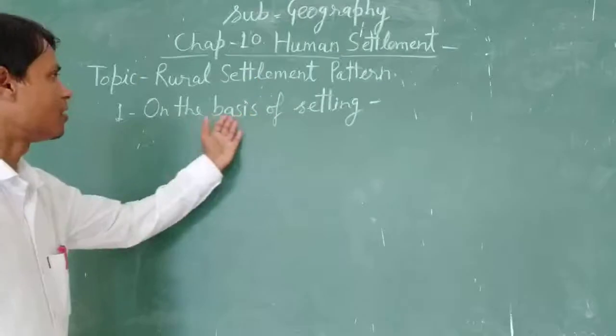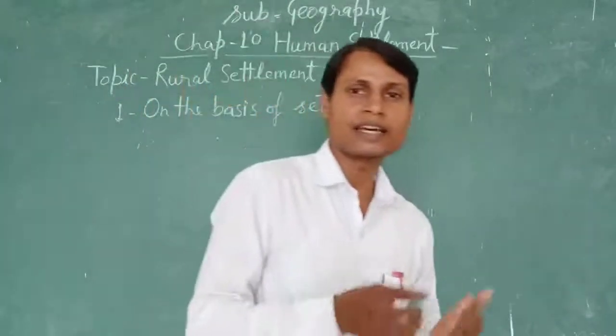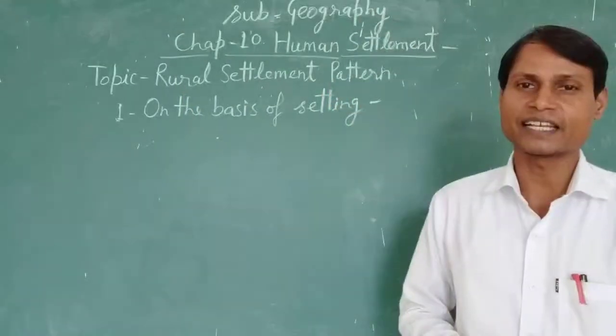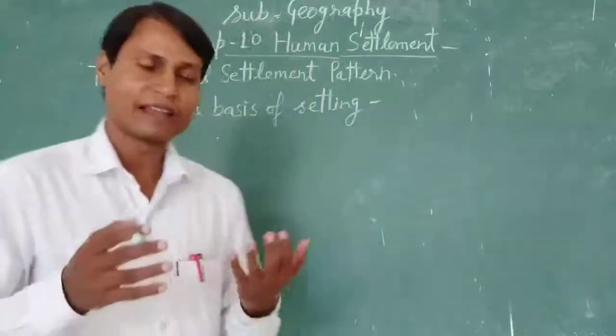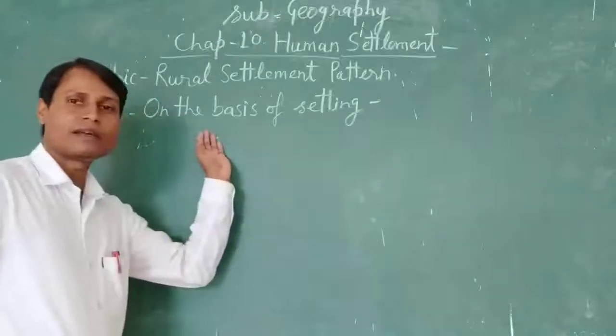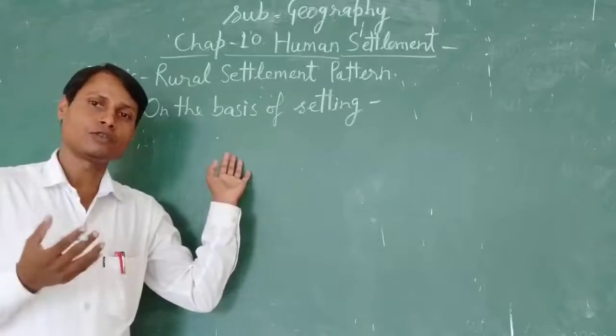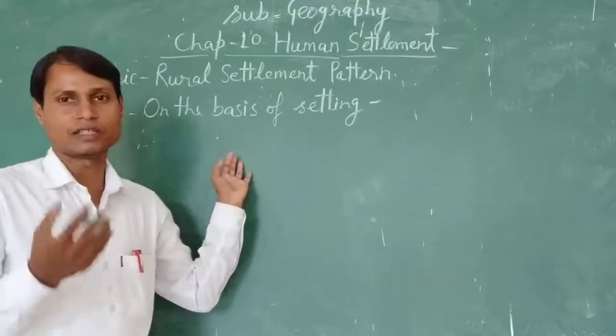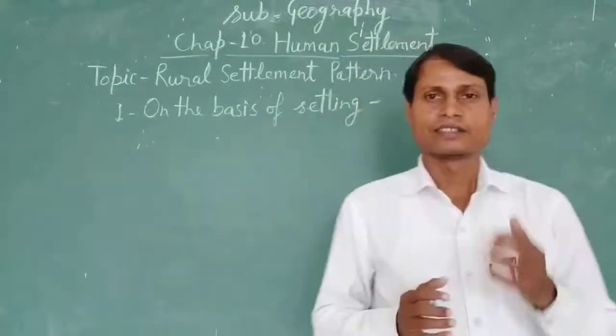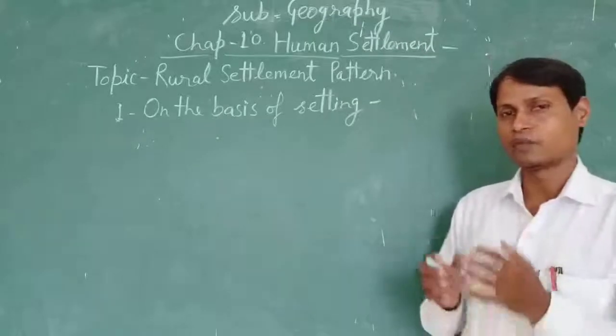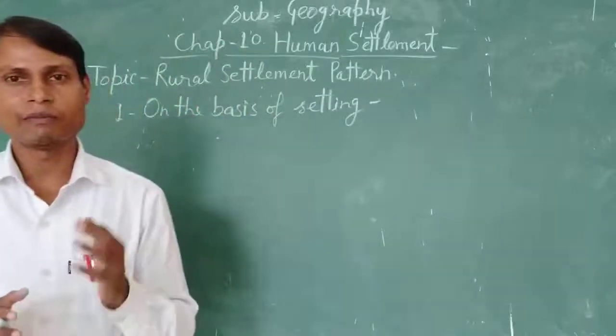So first, we will study on the basis of setting. Setting means where they are settling, where they are living, where they are residing. Plateau par, plain area par, desert area par, and mountainous region pe. You know very well, if they are living on the mountainous region, according to the climatic conditions or weather conditions on the mountainous region, they will make their houses. If anyone is residing on plain area, so according to plain areas, and what are the requirements of plain areas for houses, and which kind of house will be suitable, they will make the houses. So this is the basis of setting.